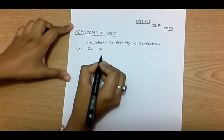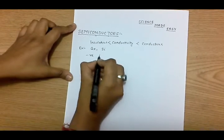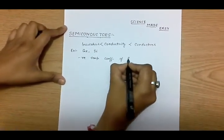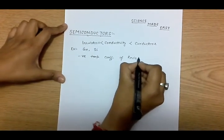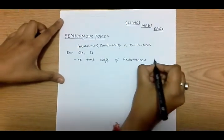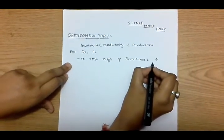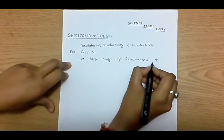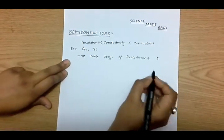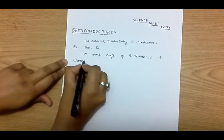Semiconductors have a negative temperature coefficient of resistance, which means that on increasing the temperature the resistance decreases, and as resistance decreases their conductivity increases. This is opposite to the behavior of conductors, in which on increasing the temperature the conductivity decreases.